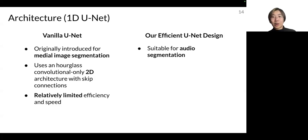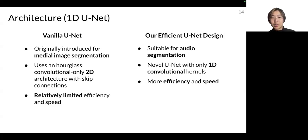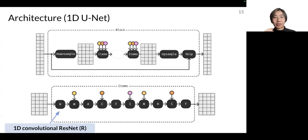However, in our efficient U-net design, it's suitable for audio segmentation. The novel U-net design is only with 1D convolutional kernels. It has more efficient and speed as a result, and can be applied on both waveforms and spectrograms. Diving into the structure, in the above, we see the overall architecture of diffusion model,